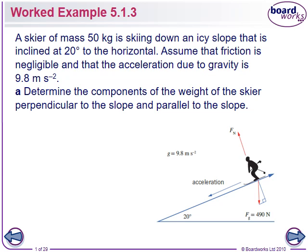A skier of mass 50 kilograms is skiing down an icy slope that is inclined at 20 degrees to the horizontal. Assume that friction is negligible and that the acceleration due to gravity is 9.8 meters per second squared. Determine the components of the weight of the skier perpendicular to the slope and parallel to the slope.